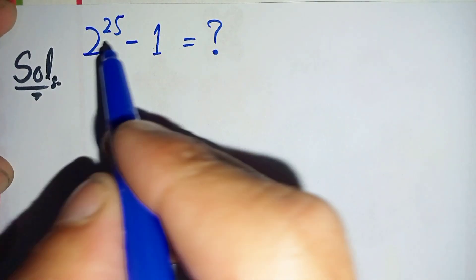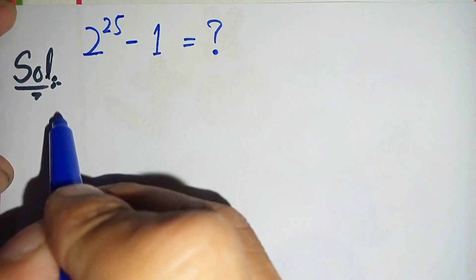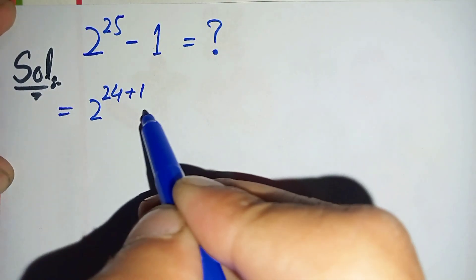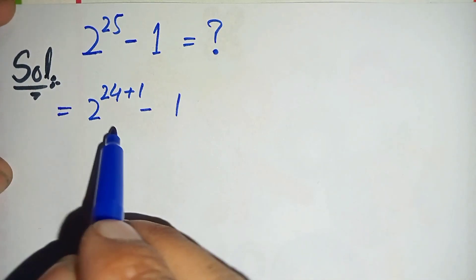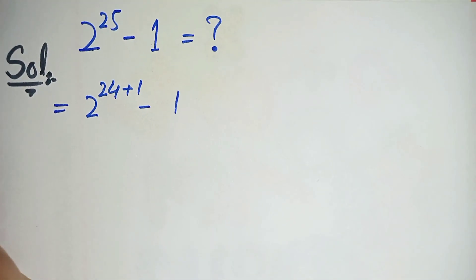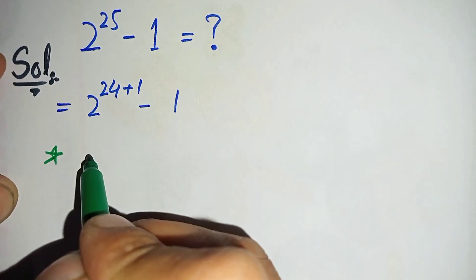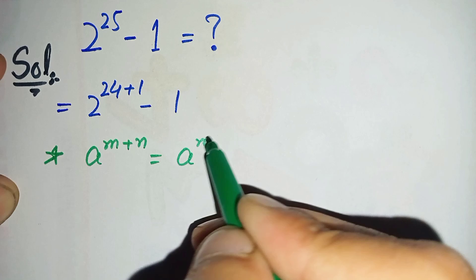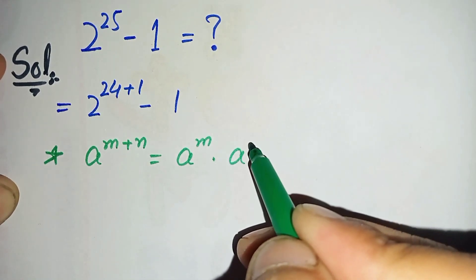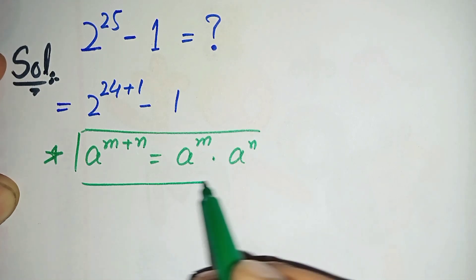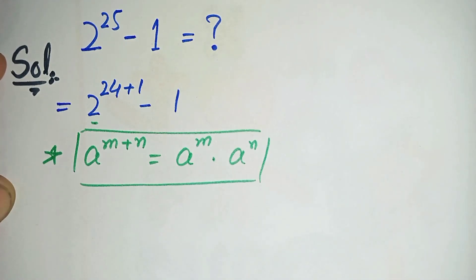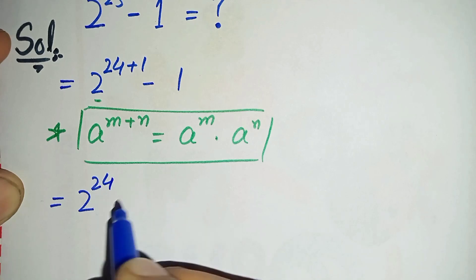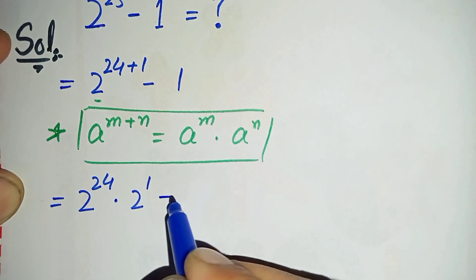We change the power 25 to the sum of 24 plus 1, and then we will split the powers over base 2. So next we can write 2 raised to power 25 as 2 raised to power (24 plus 1) minus 1. Here we use the exponential property: a raised to power m plus n can also be written as a raised to power m times a raised to power n. So this term becomes 2 raised to power 24 times 2 raised to power 1, minus 1.